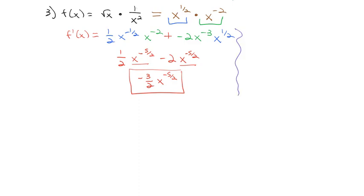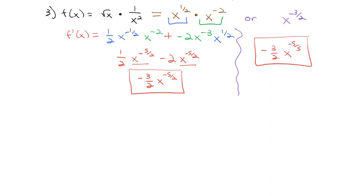Interestingly, we could have used our exponent properties before taking the derivative. With this product, we can add the exponents: 1/2 and negative 2 gives negative 3/2. Then we could have just used the simple exponent rule, bringing out the negative 3/2 and subtracting 1 from the exponent to get negative 5/2. Sometimes algebra before taking the derivative will make the answer easier without having to use the product rule.